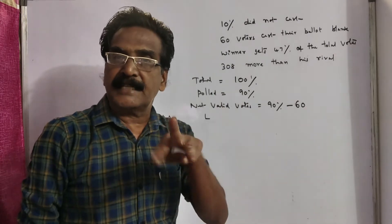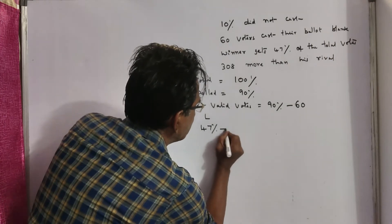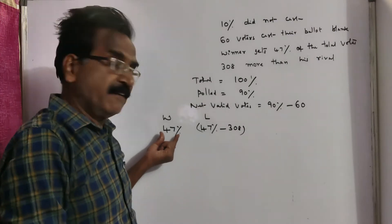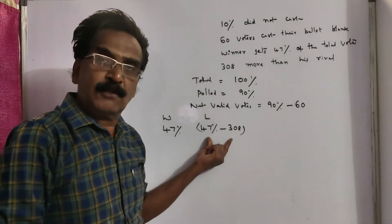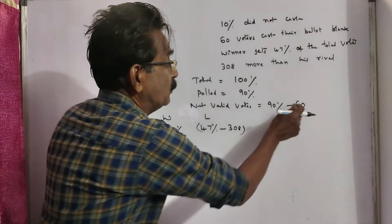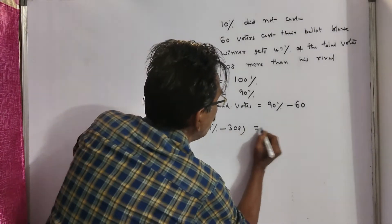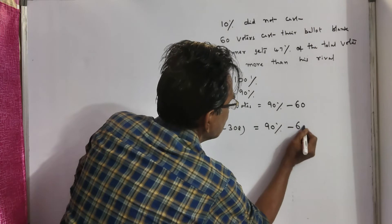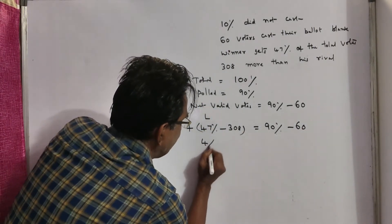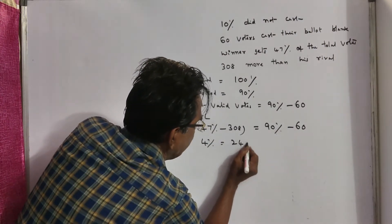The winning candidate gets 308 more than his rival, so the losing candidate must have got 47 percent minus 308. This plus that must be equal to net valid votes, which is 90 percent minus 60. So 47 plus 47 equals 94 percent, giving us 94 percent minus 60 equals 308, which simplifies to 6 percent equals 248, then 4 percent equals 248.